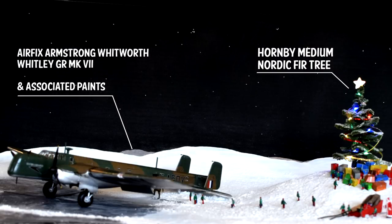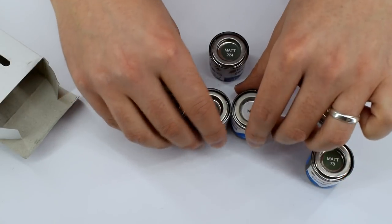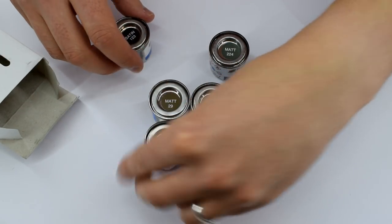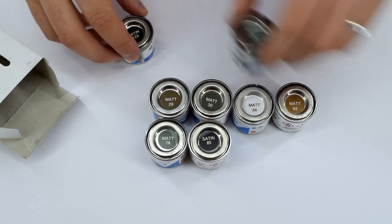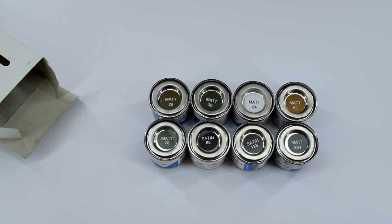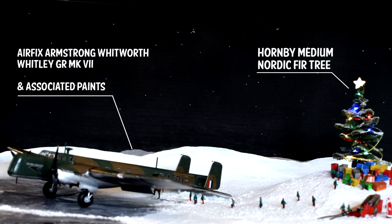Before I start the video, I'd like to mention that Airfix provided me with the 1 72nd scale Armstrong Whitworth Whitley model kit, a selection of paints which consist of Humbrol 29, 30, 34, 62, 78, 85, 123 and 224, and are all enamel. I would have preferred acrylic, but they didn't have them in stock. And I also received a Hornby Nordic Fur model tree, which I will convert to a Christmas tree later on. All of these items were free of charge for the purpose of review and building this diorama, but all opinions do remain my own.